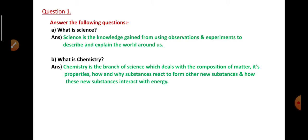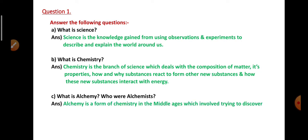Next question: What is alchemy? Who were alchemists? Alchemy is a form of chemistry in the Middle Ages which involved trying to discover how to change ordinary metals into gold by magical goals.